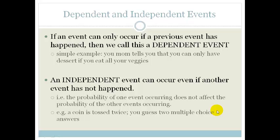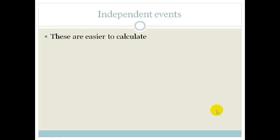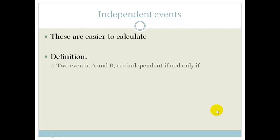Those are the differences between dependent and independent events, but we need to find a way to mathematically quantify this. It's easier to calculate independent events than dependent events. The definition is: two events A and B are independent if and only if the probability of A and B together equals the probability of A multiplied by the probability of B.